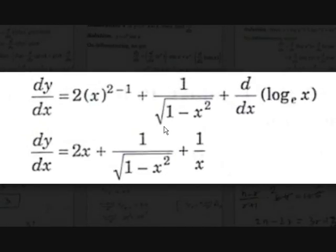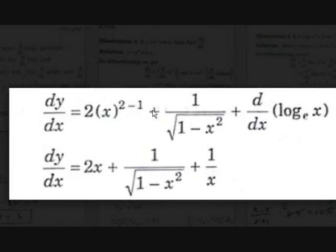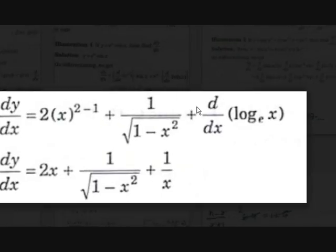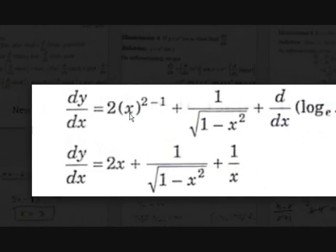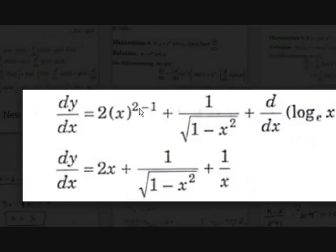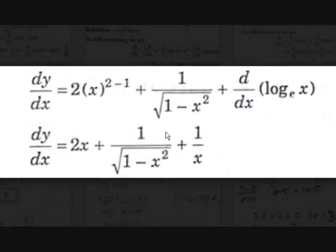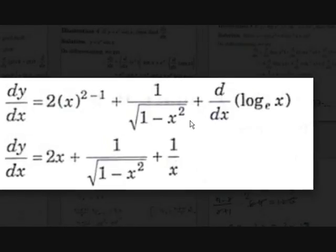d/dx of x squared: the power comes before, giving 2 into x power 2 minus 1, which is 2x. For sin inverse x, the standard formula gives 1 over square root of 1 minus x squared. And d/dx of log x (natural logarithm) is 1/x. So dy/dx equals 2x plus 1 over root(1 minus x squared) plus 1/x. We learned these standard formulas in the previous video.